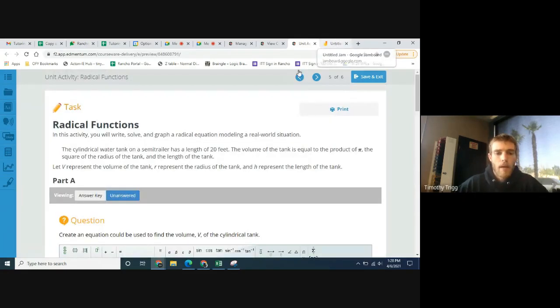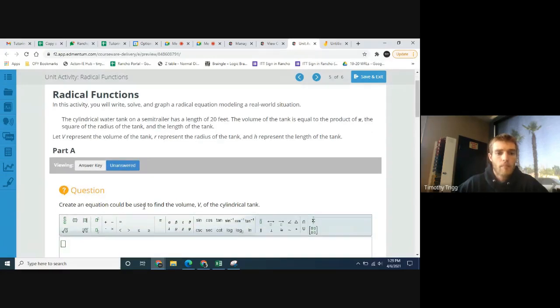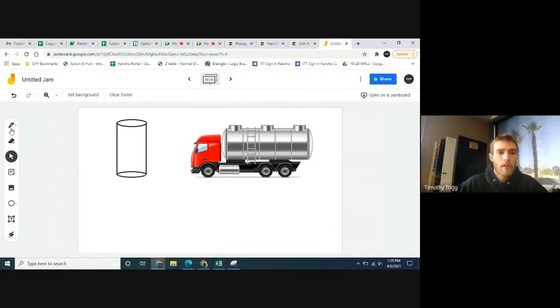Let's put all this in an answer here. We want to create an equation that could be used to find the volume v of the cylindrical tank. The volume follows this formula: pi r squared times h. Now h is basically the length of the tank. In our case, it told us the length was 20 feet. So 20 feet, that's our h.